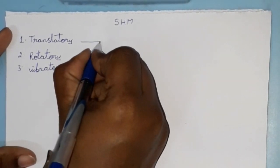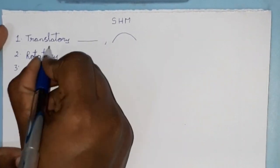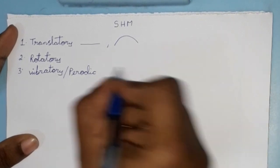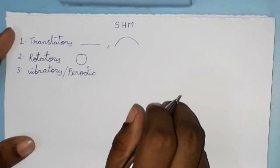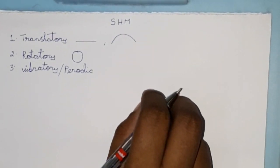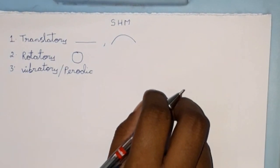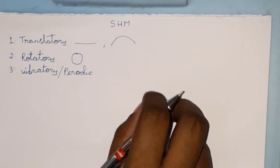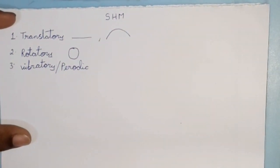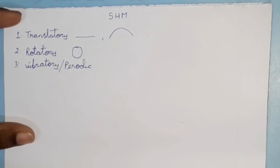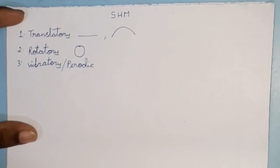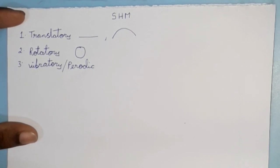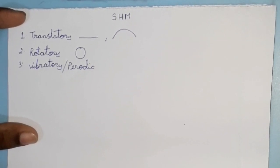If a body moves in a straight line, it will be translatory motion. Whenever the body moves in a circular path, we call it rotatory motion. Vibratory motion is whenever we have some vibrations — for example, when we have a phone in silent mode. Periodic motion is any motion that repeats itself in equal intervals of time, like a pendulum of a clock.